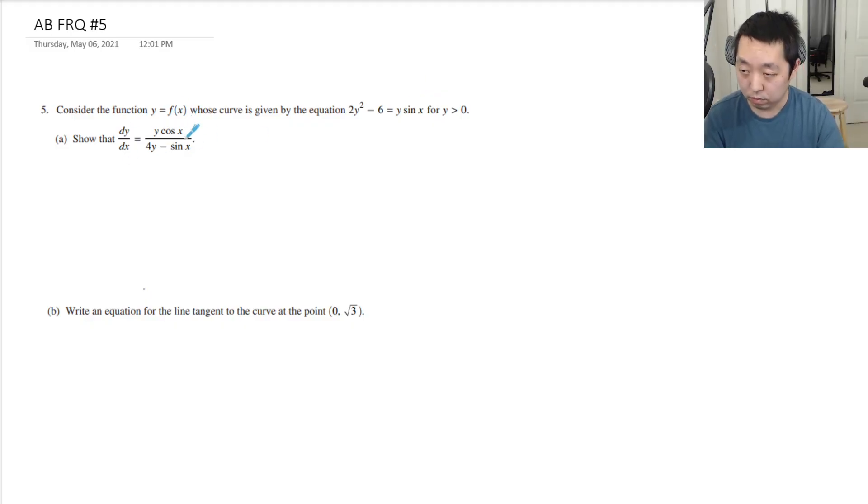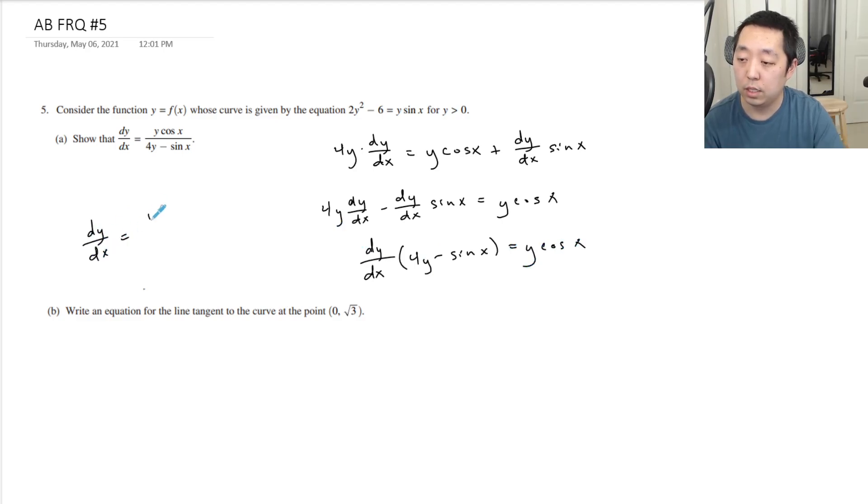Show that dy dx equals y over x. So this is implicit differentiation. You can take the derivative of both sides. Derivative of 2y squared is 4y times dy dx. Derivative of 6 is 0. Derivative of this I have to do product rule. y times the derivative of sine is cosine x plus the derivative of y times sine x. You want to group all the dy dx's. I'm going to move this one over. I'm going to factor out dy dx. And then you just divide this part to the other side so we get dy dx equals y cosine x over 4y minus sine x. So implicit differentiation, that's that.